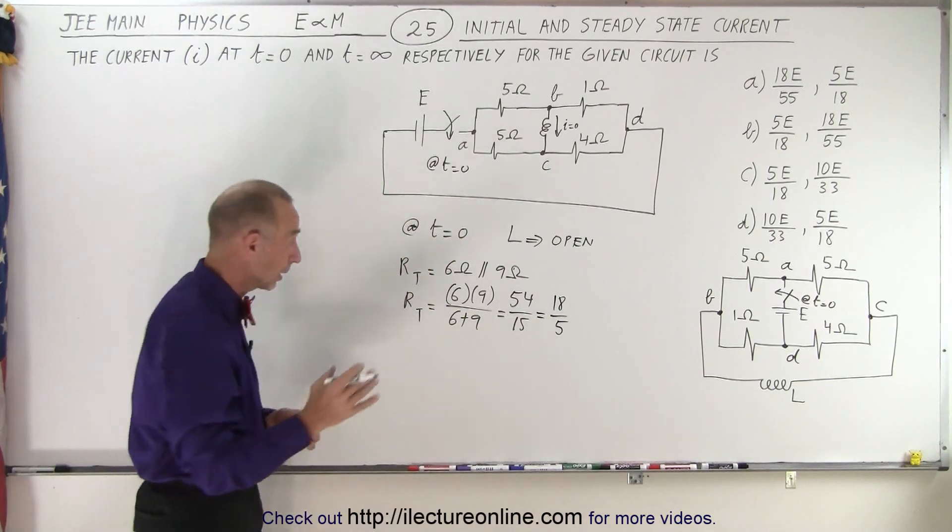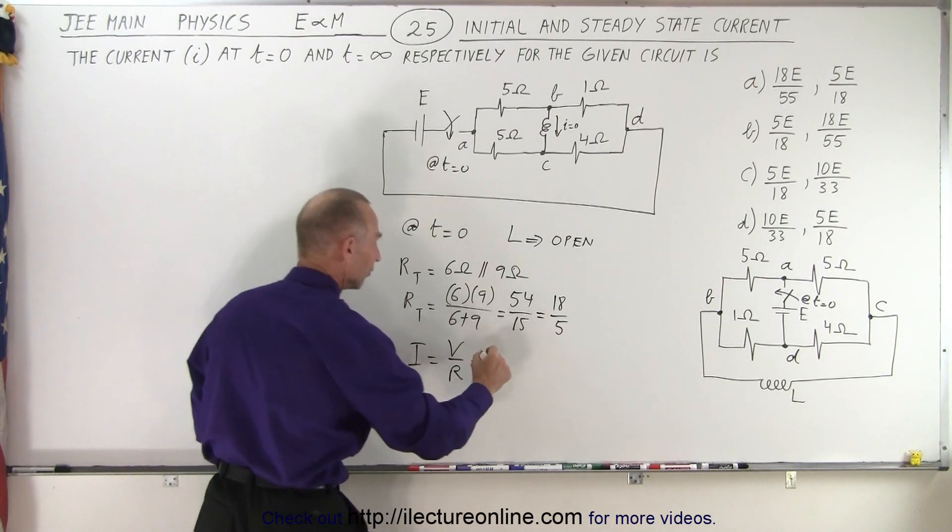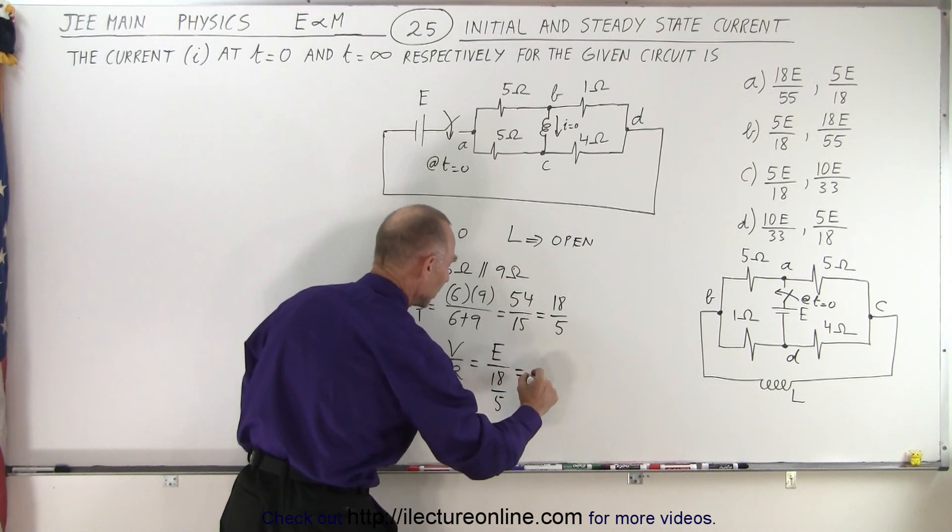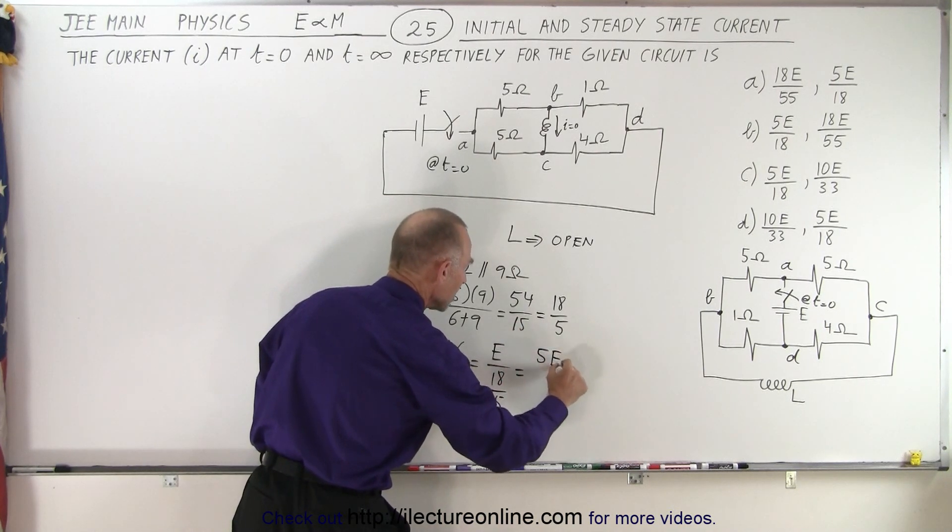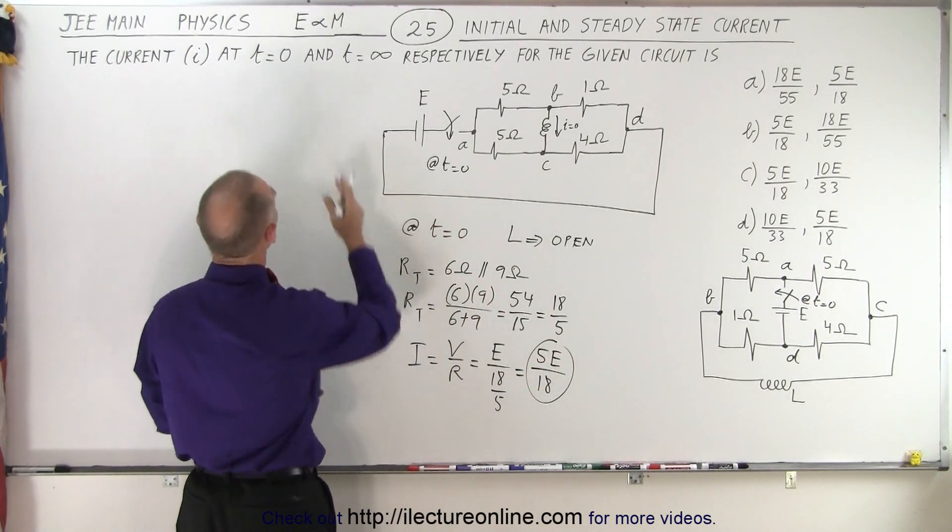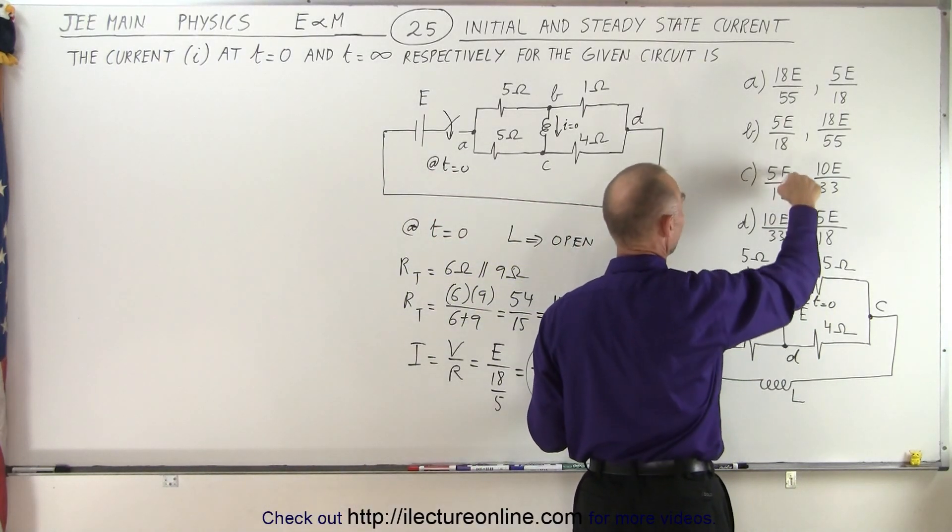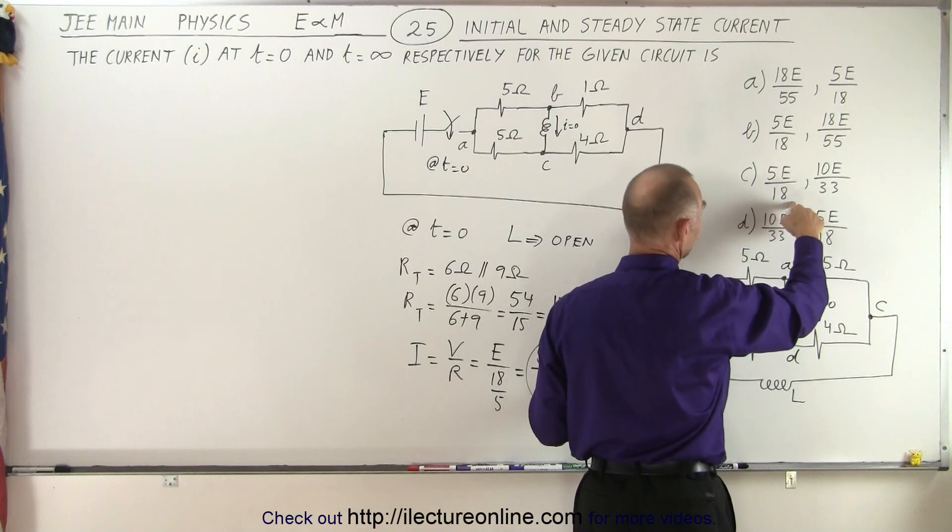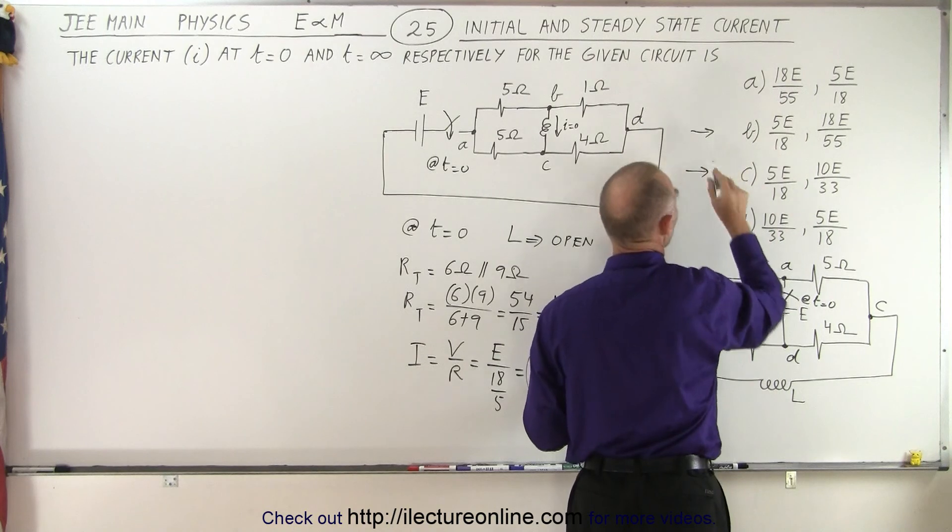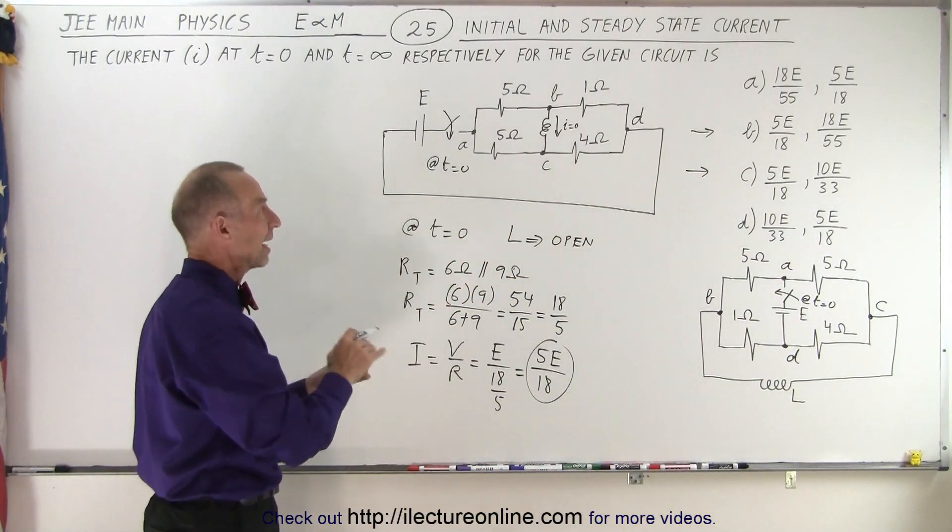And then when we calculate the current, I equals V over R, so in this case V is E, and R is 18 over five, so that would be equal to 5E over 18. So that would be the current at time equals zero. So that would be the first one of the two, and which of these matches here? 5E over 18. Wow. Oh no, we have two of those. So we have potentially B and C as being the only two possible answers. They both have 5E over 18 for the current at time equals zero. So let's say that you want to save time, and now you want to guess which one it is?